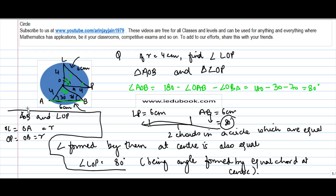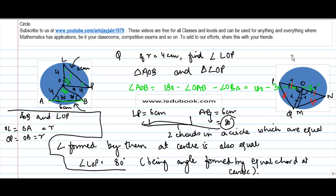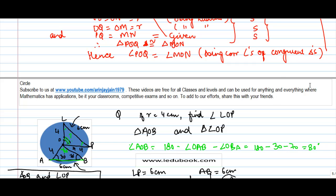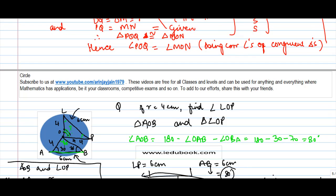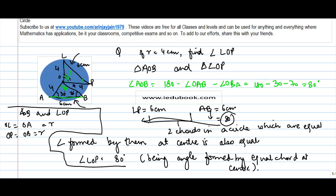And the third thing that we note here is that AB is equal to LP, equal to 6 centimeters.